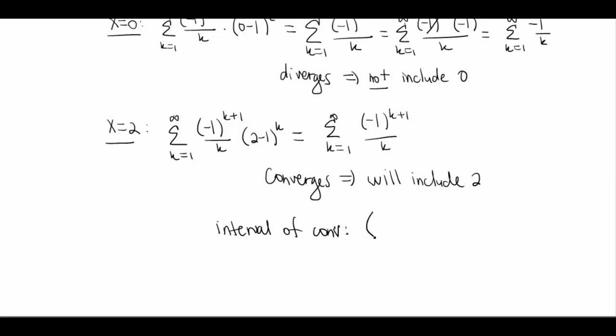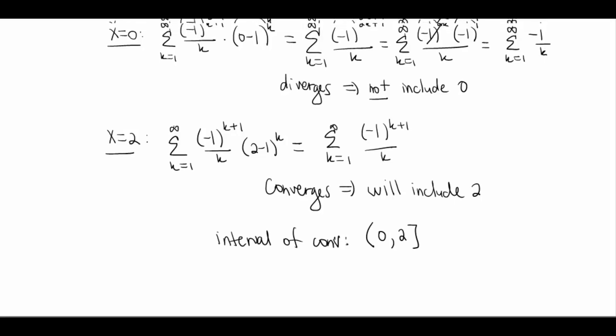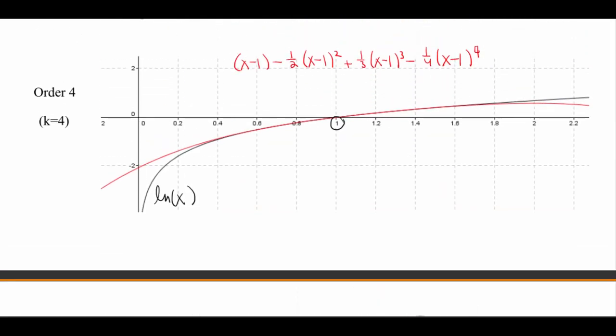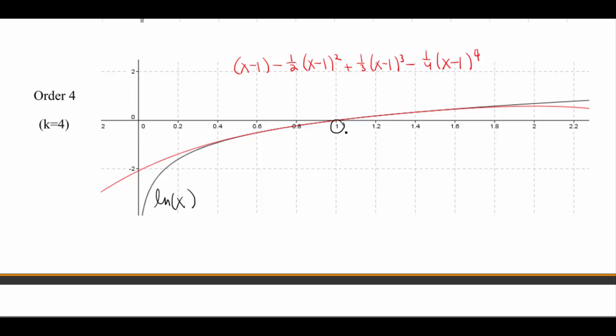All right, so my interval of convergence is gonna look like the open parenthesis 0 to 2, and then with a closed bracket. So this tells me then that my series is going to be very close to my original function. Let me go back and look at this. So here, again, this makes perfect sense. At 0, we have this total separation. But over here at 2, we're pretty darn close. All right, thank you for watching.